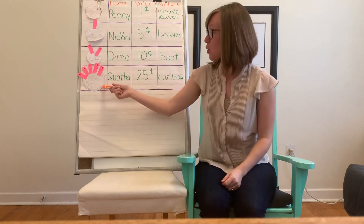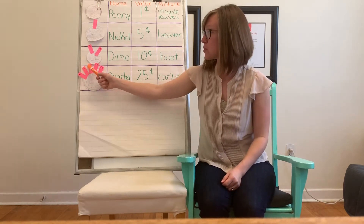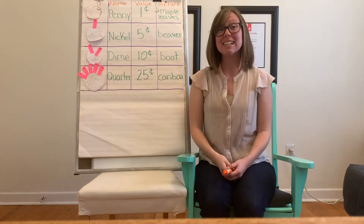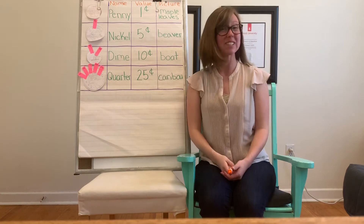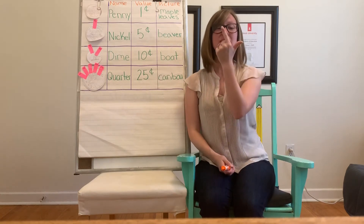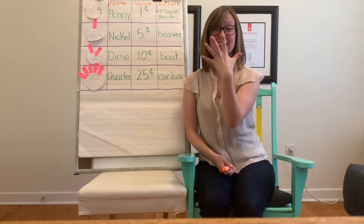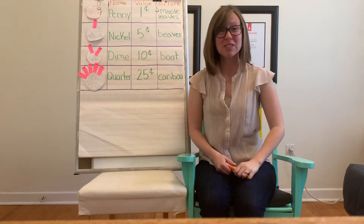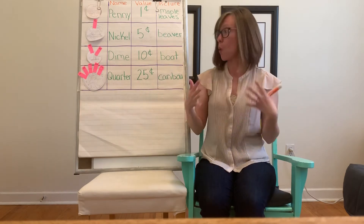With our quarter it has five hairs on it — one, two, three, four, five — because to get its value of twenty-five cents I have to skip count five times: five, ten, fifteen, twenty, twenty-five to get the value of that coin. So we're going to use that strategy to count up some mixed coins.